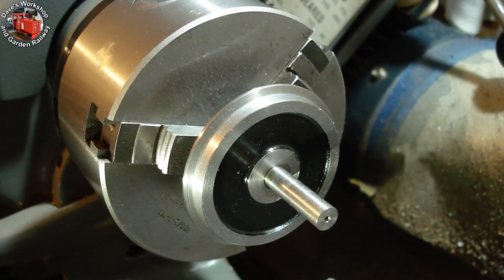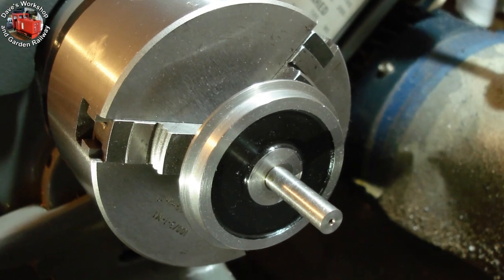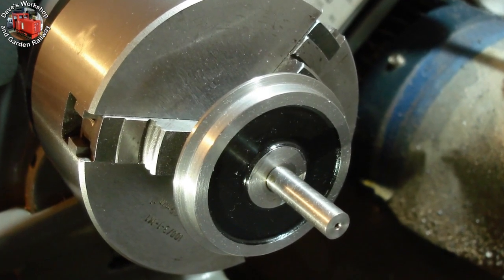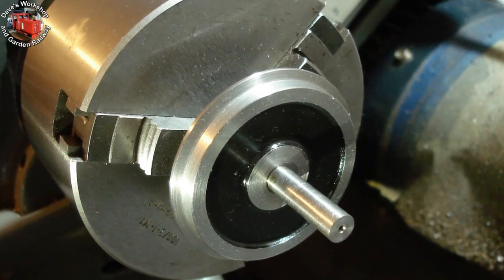I'm loctiting one wheel on each axle, leaving access for eccentrics. Using the chuck jaws to square the wheel while securing.